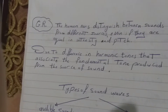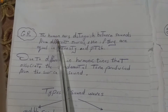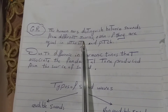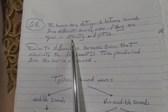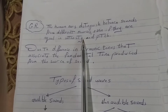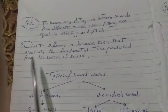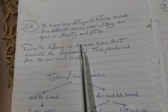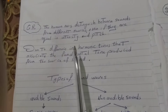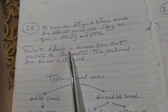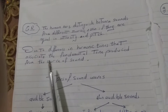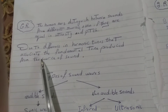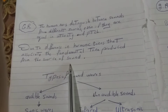If we ask you to give a reason why the human ear can distinguish between sounds from different sources even if they are equal in intensity and pitch — the answer is: due to the difference in harmonic tunes, because the harmonic tunes differ from one instrument to another. The fundamental tone is constant, but the harmonic tunes that associate the fundamental tone produced from the source of sound are different.